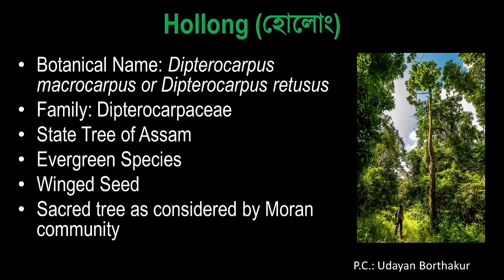So, the first species is Hollong. I know that Hollong's botanical name is Dipterocarpus macrocarpus and Dipterocarpus retusus. So, their family is Dipterocarpaceae, and I know that it is a state tree. This Hollong is an evergreen species and it has a winged seed.